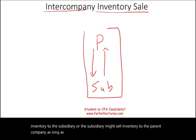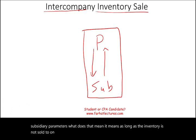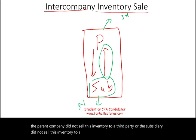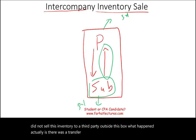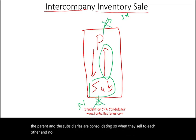As long as this transaction is within the parent and subsidiary's parameters — meaning as long as the inventory is not sold to an outsider — for example, the parent company did not sell this inventory to a third party, or the subsidiary did not sell this inventory to a third party outside this box — what actually happened is there was a transfer of inventory inside the company.